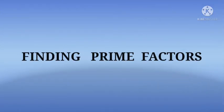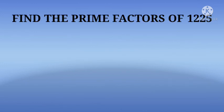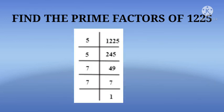Now we will discuss how to find prime factors. Find the prime factors of 1225. At first we will divide 1225 by 5, then we will get 245. Again we will divide 245 by 5.